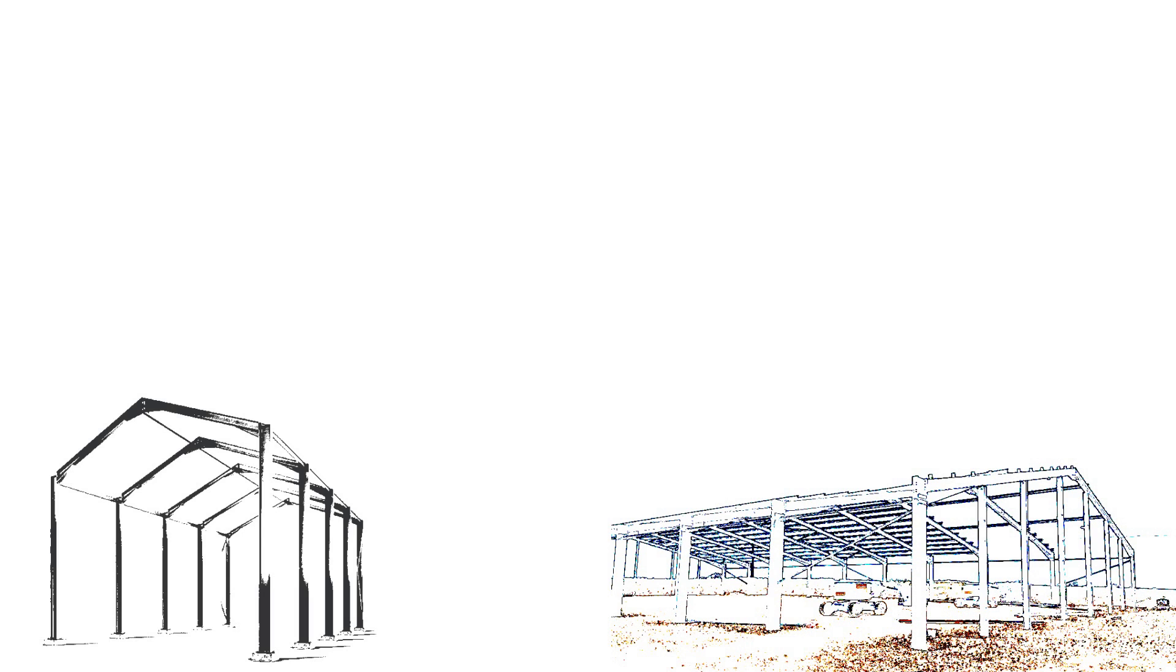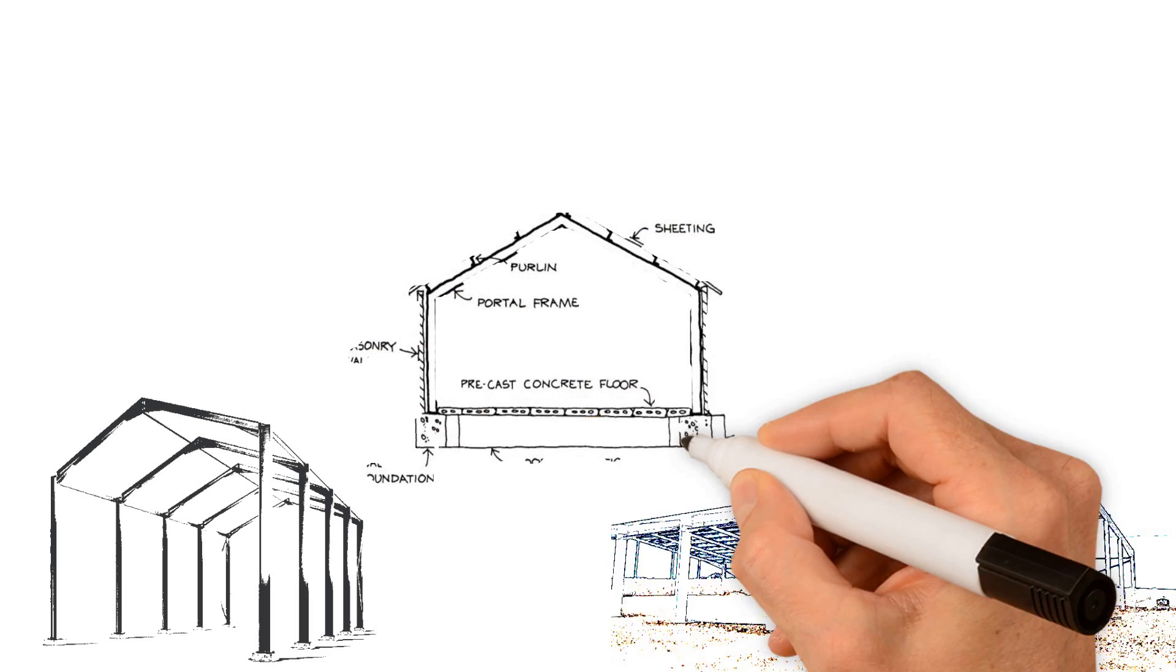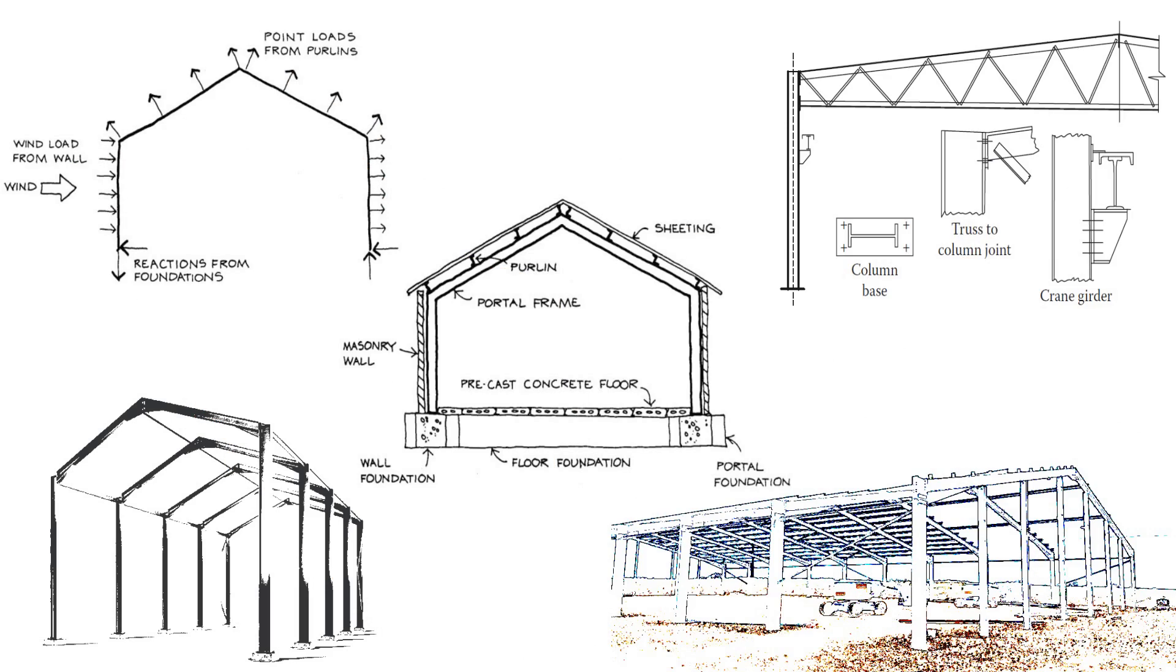The loading scheme on the portal frame usually includes dead load, imposed load, services, wind load, crane loads, etc. In the plastic analysis of portal frames, preliminary analysis is usually carried out to determine the member sizes before detailed checks are carried out to determine the adequacy of the selected sections.